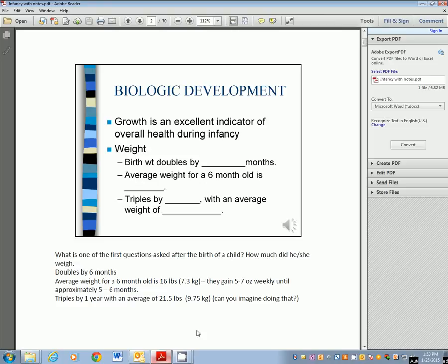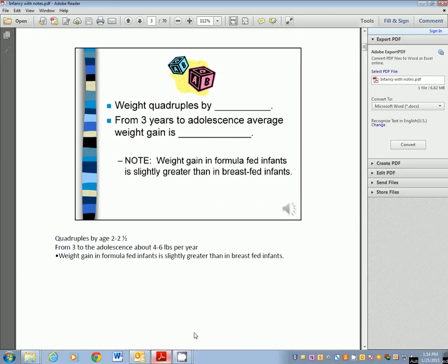Can you imagine doing that in this day and time? Thank goodness we don't triple our weight in one year. Weight quadruples by two to two and a half. From three years old to the adolescent growth spurt, they should be gaining about four to six pounds per year. Weight gain in formula-fed infants is slightly greater than breastfed infants and sometimes we tend to overfeed our formula-fed infants.